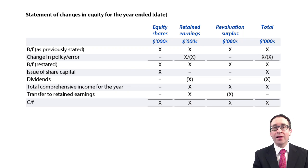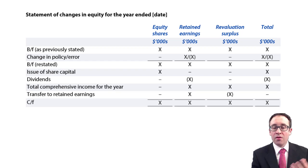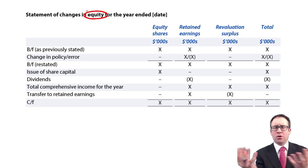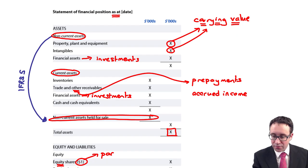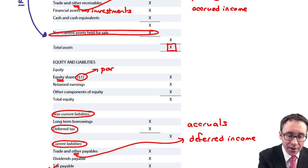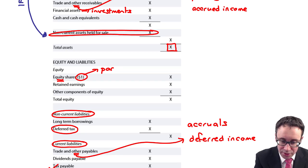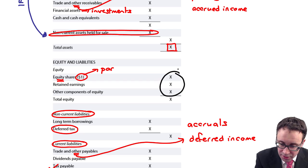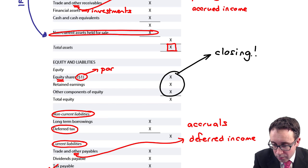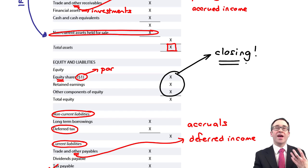Let's highlight some of the key points about the statement of changes in equity. It's very literal in terms of its title because it is a financial statement that looks at the changes in equity. If we go back to your statement of financial position, we have the equity balances — equity shares, retained earnings, other components of equity such as a revaluation — and they are our closing figures, our carry-forward figures.